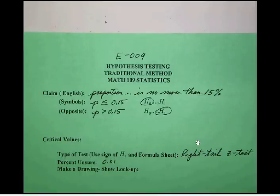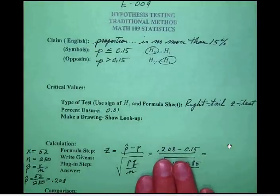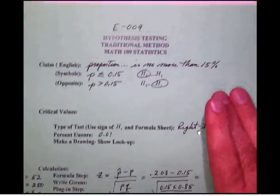So we pick our null and alternate hypotheses as we typically do. Notice that we are dealing with a traditional test, so we have to work with critical values. In this case, the sign of H1 is a greater than sign, so we're dealing with a right tail test. The formula for a proportion test is going to be z.